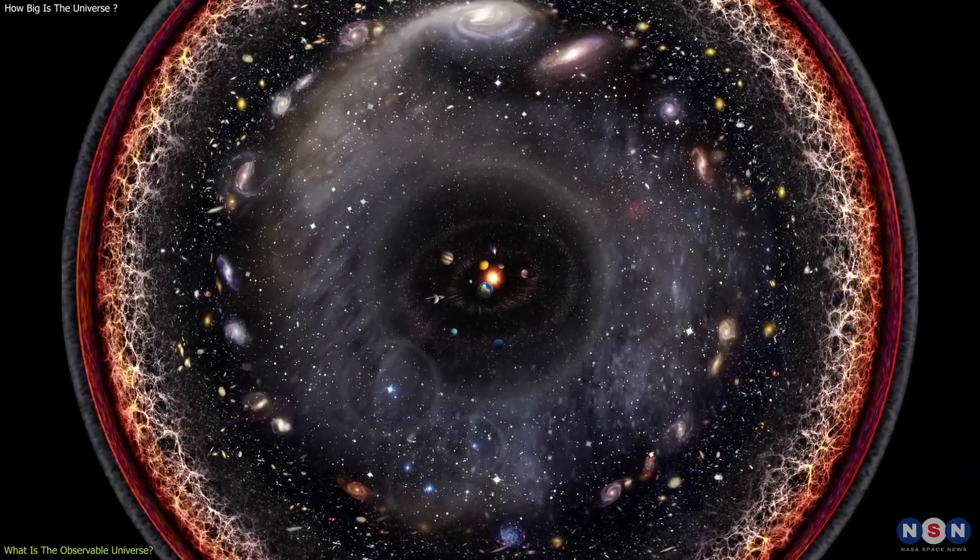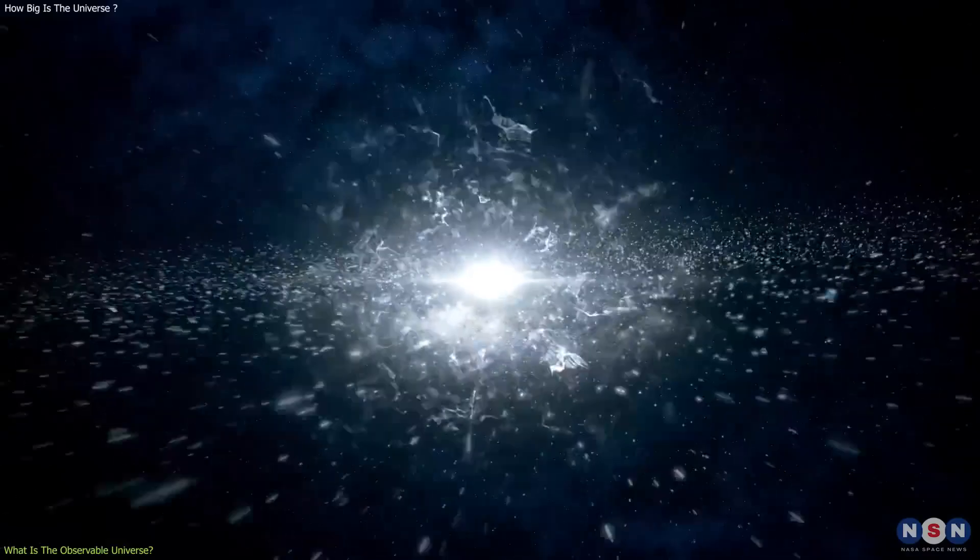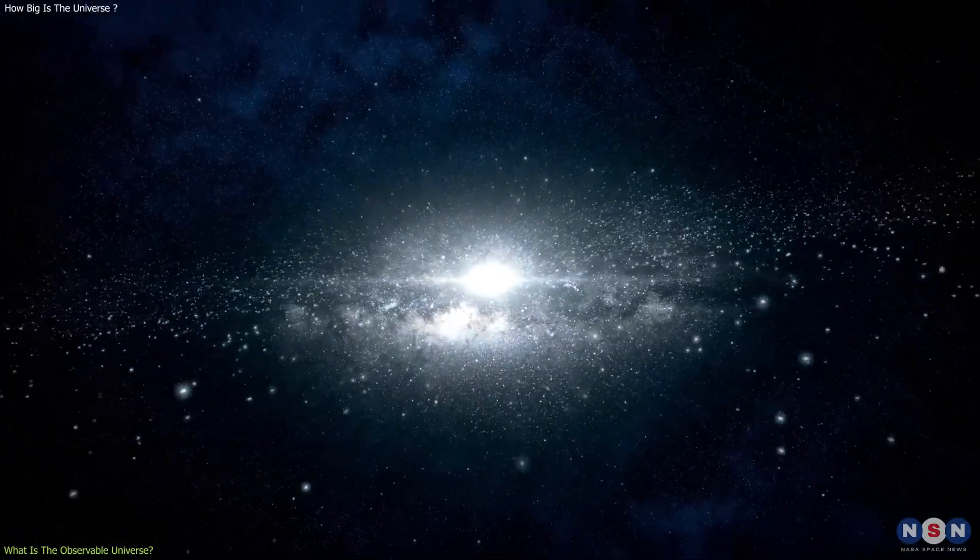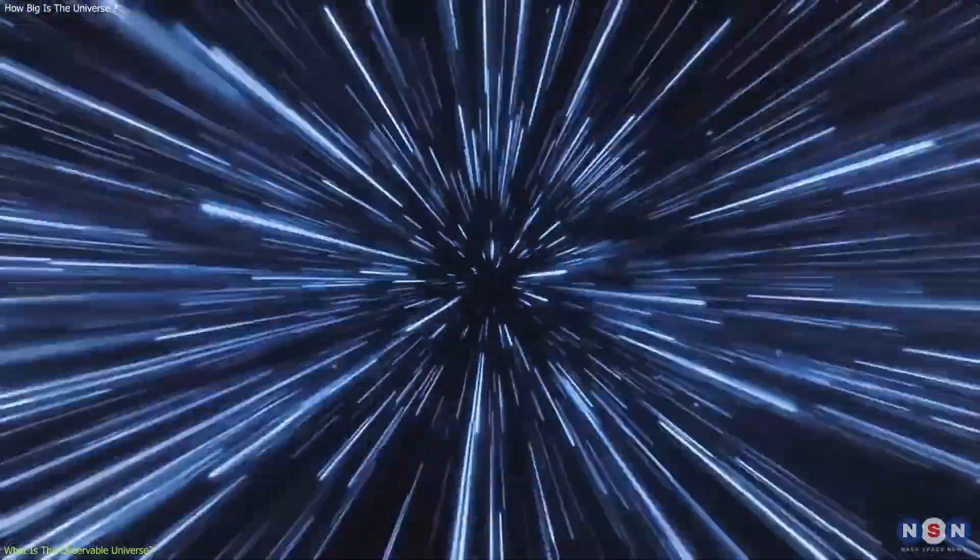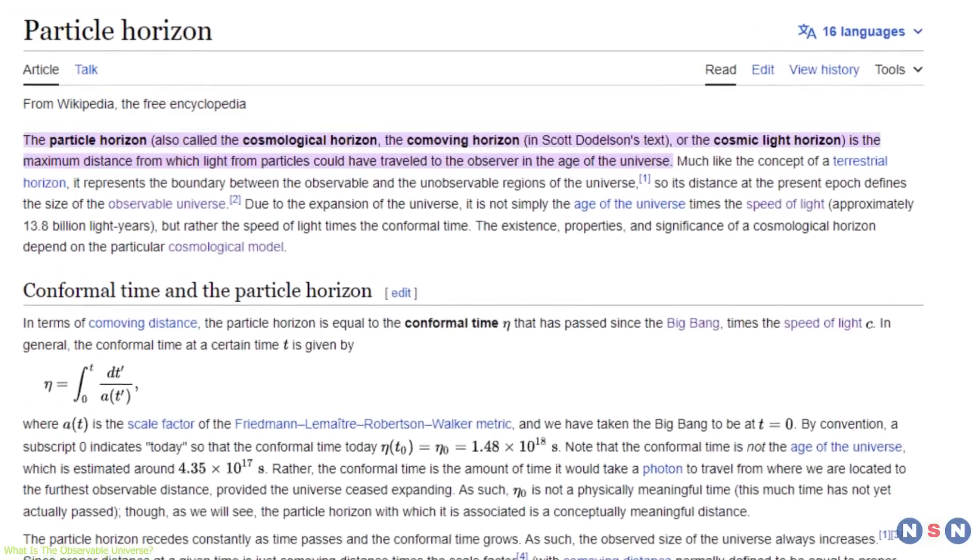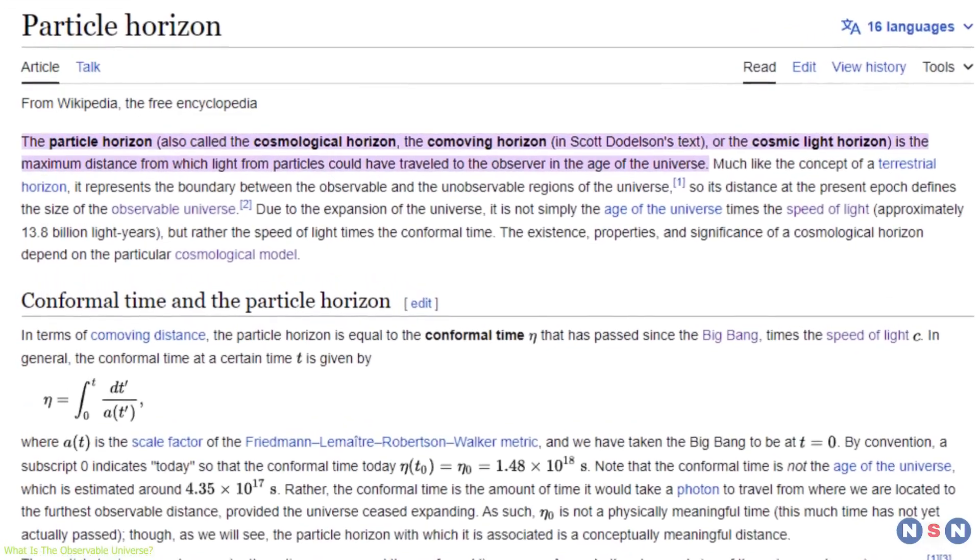So, the observable universe is defined by the distance that light has traveled since the Big Bang, which is about 46 billion light years in any direction. This distance is called the particle horizon, and it is the boundary of the observable universe.